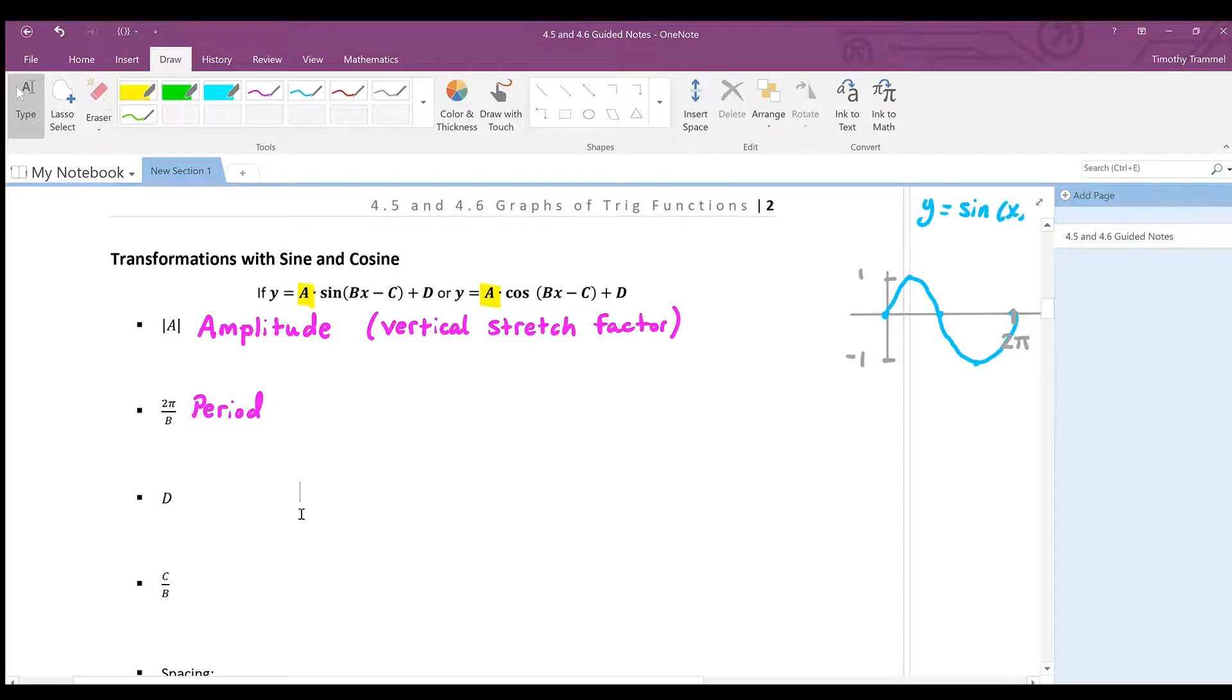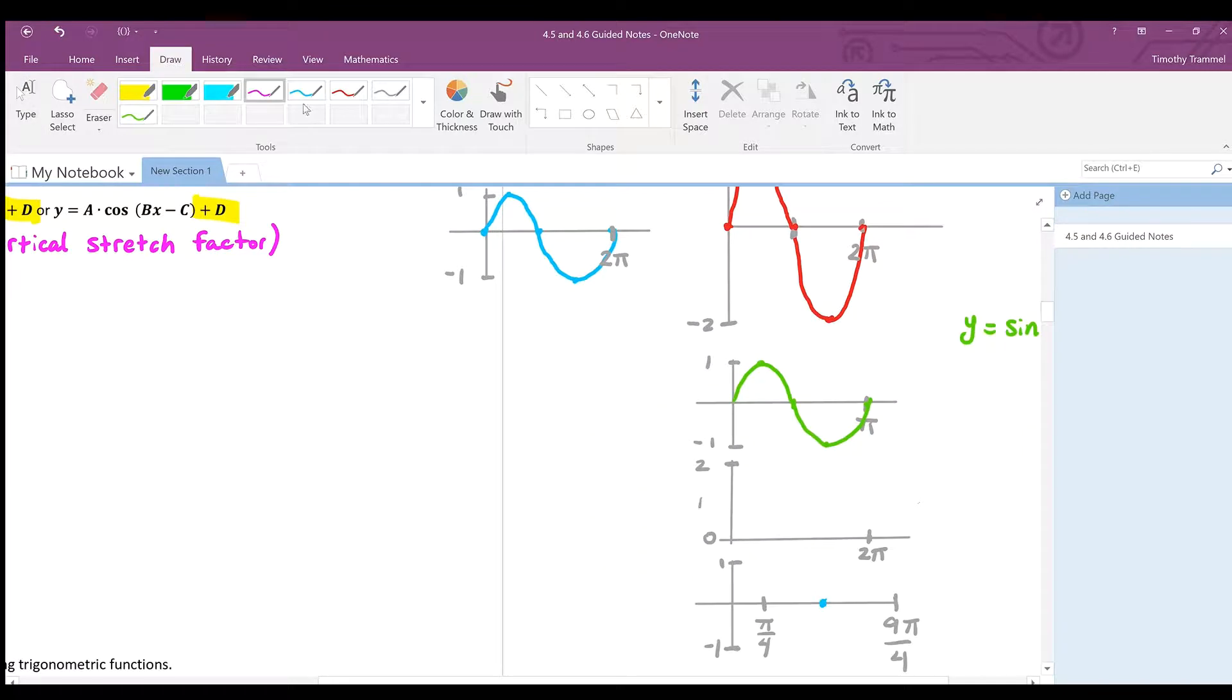Then plus d. This is probably the easiest one. Let's see where that is here. It is at the end of each one of these. This is just our vertical shift. And this is going to scoot our graph up d units. Assuming we're adding. If we're subtracting a number, it's going to scoot our graph down.